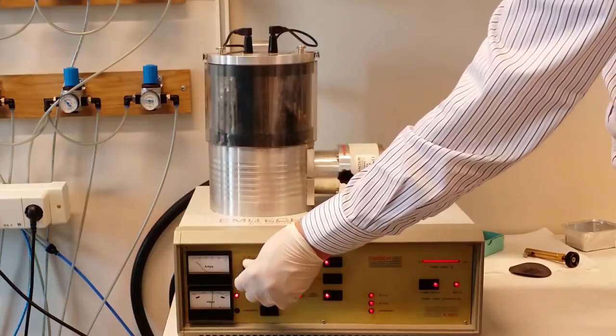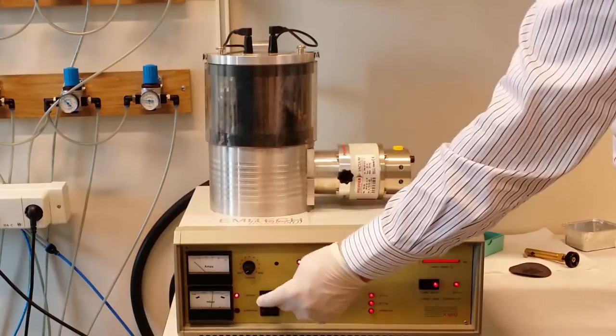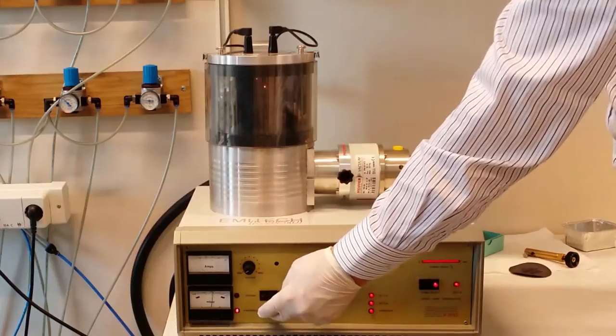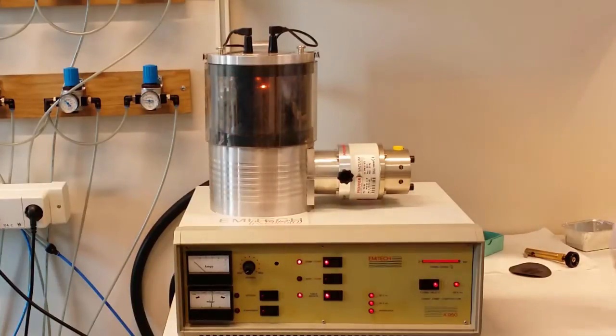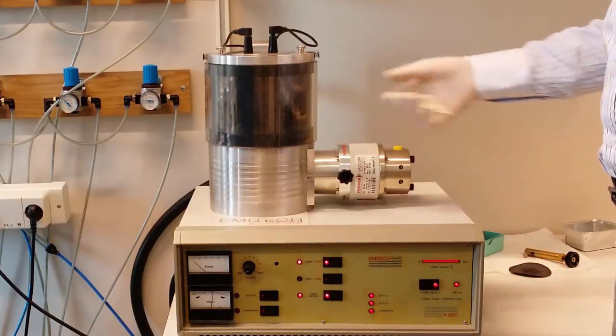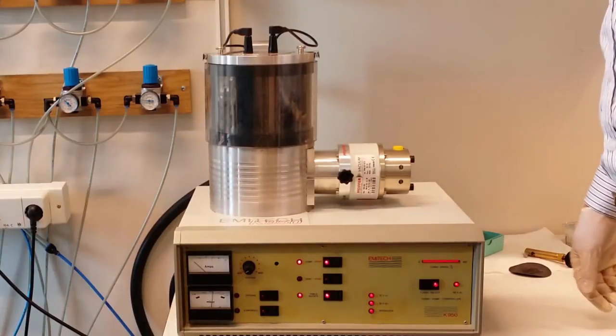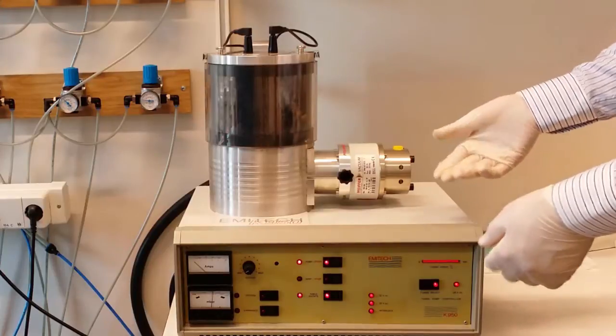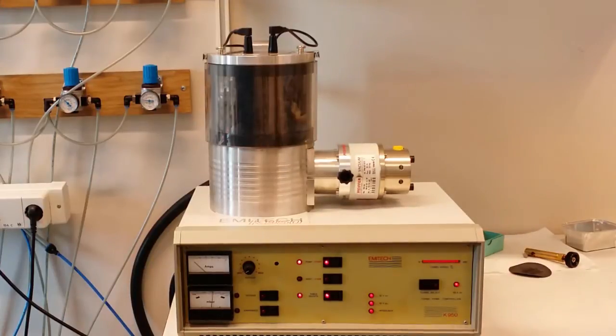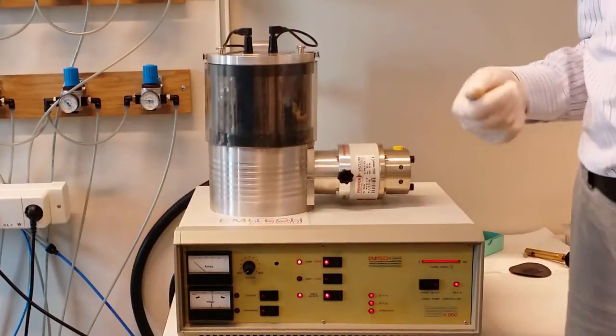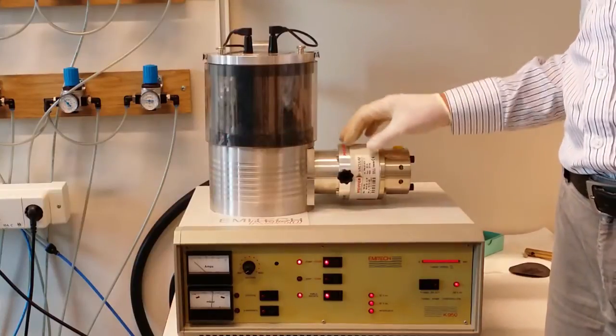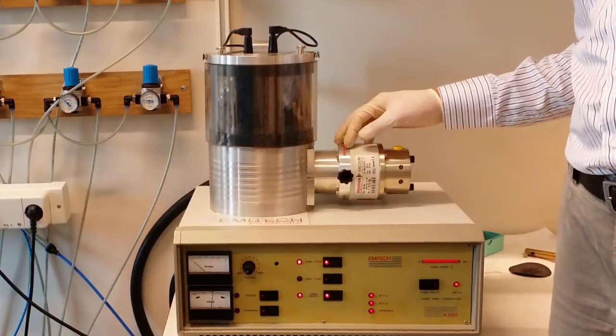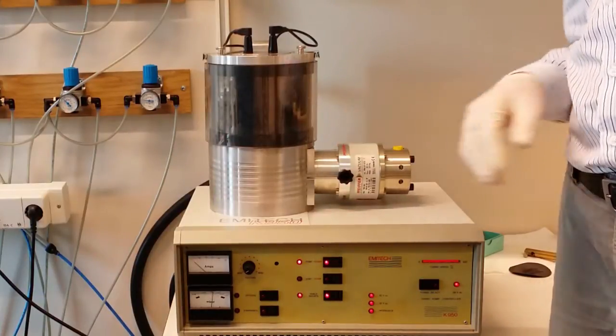I usually do this twice to get a better carbon layer. Outgas. Off. Evaporate. Like so. Now we have evaporated the sample with carbon. So now we are going to shut down the system by turning off the vacuum system. And that will also take a few minutes. That is very important because if you let air inside while this turbo pump is going at full speed it will crash instantly.